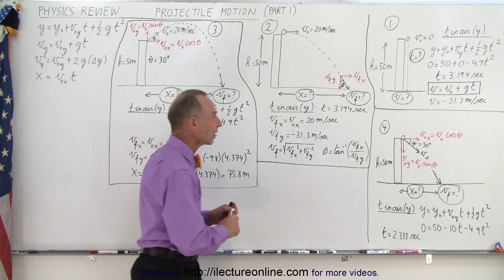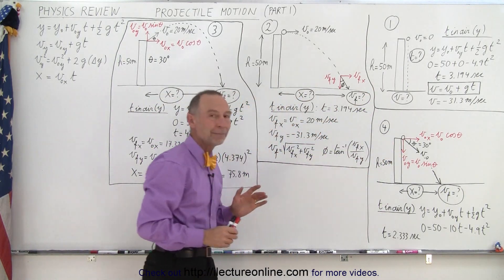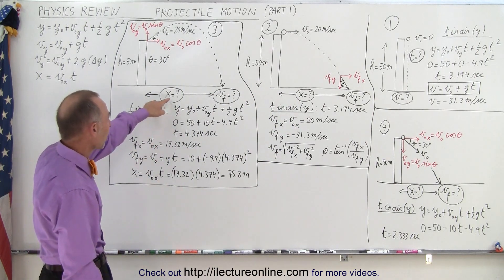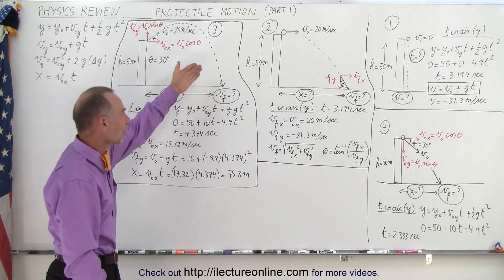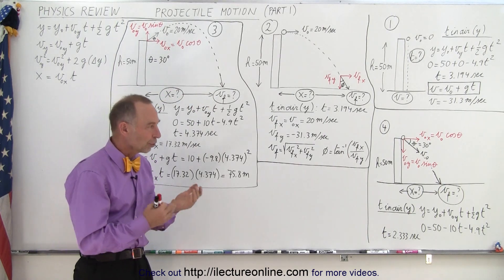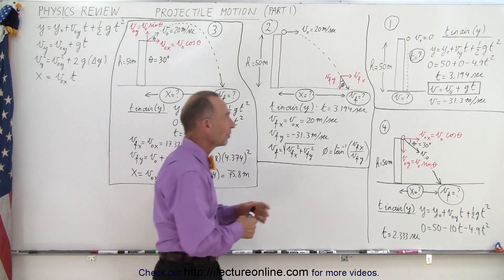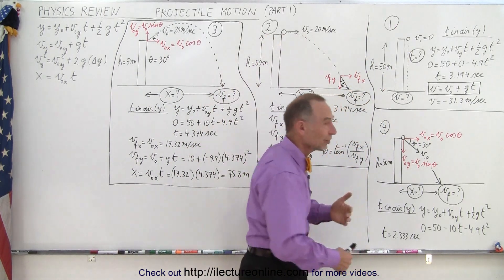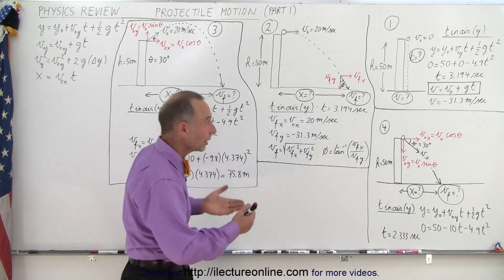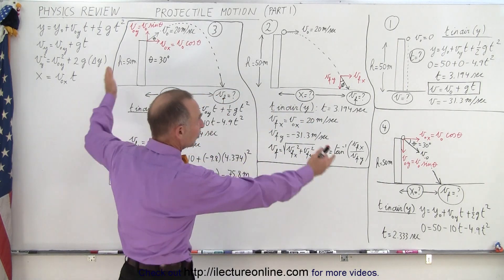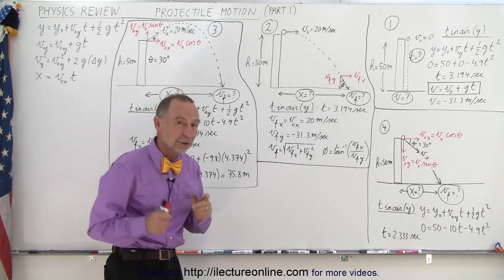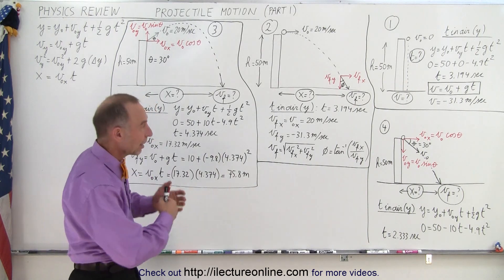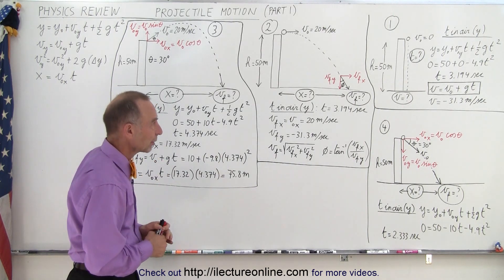All four problems involve projectiles either dropped or thrown from a building 50 meters high. The typical questions we want to answer are: how far did it go before it landed, and what was the velocity when it landed? When an object is simply dropped or thrown horizontally, the time in the air is exactly the same, because only the y-component of velocity controls the time in the air — which then controls how far something goes and how fast it moves when it hits the ground.